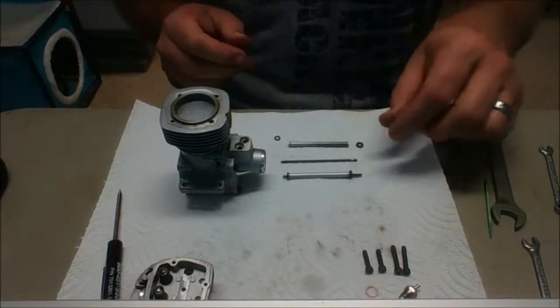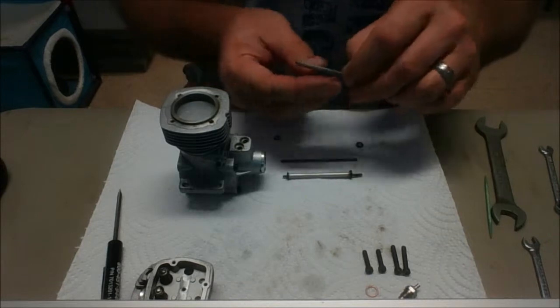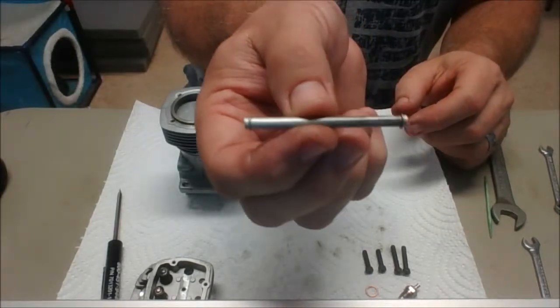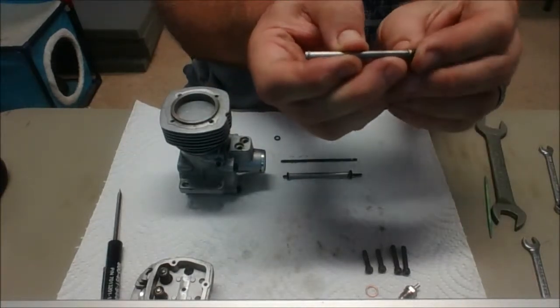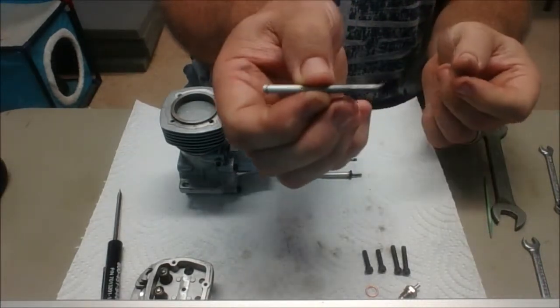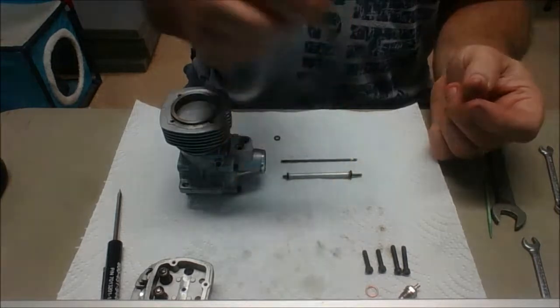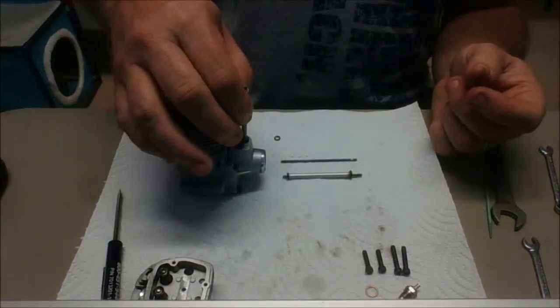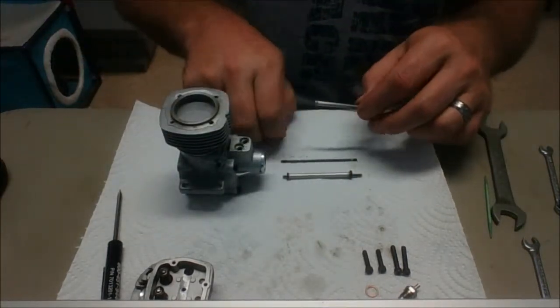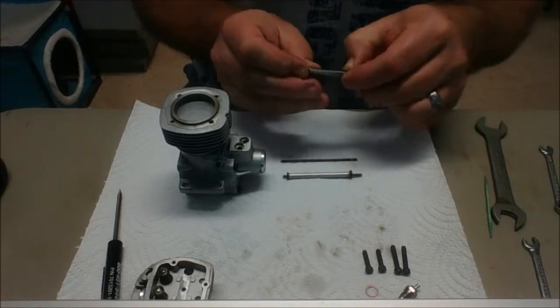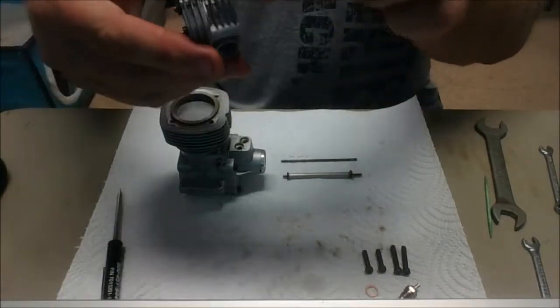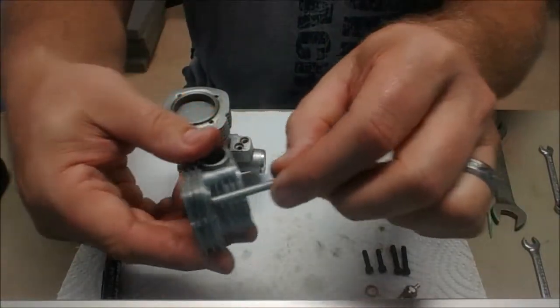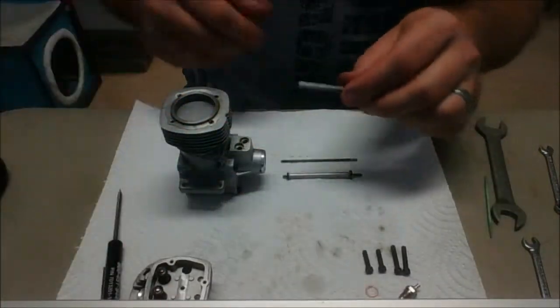The push rod tubes you'll see have these little ridges on them and should have two o-rings on there. The big o-ring goes on the end that's going to sit under the engine here, and the small o-ring should pop into place and it's going to actually be the part that seals up in the head area here.